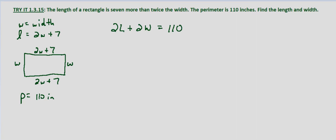So let's substitute what we have. 2 times, we know the length is 2 times the width plus 7, plus 2 times the width equals 110.